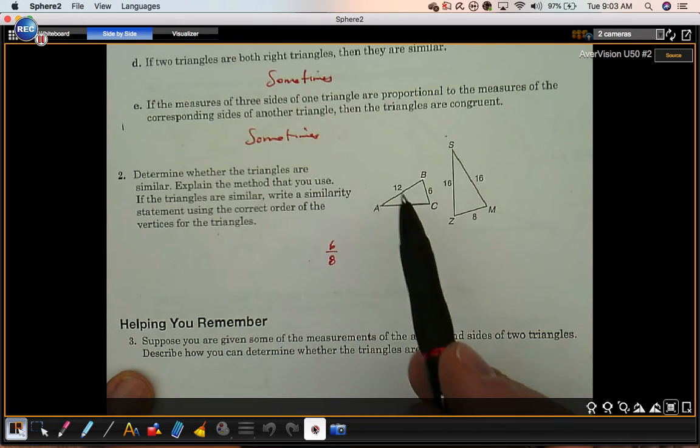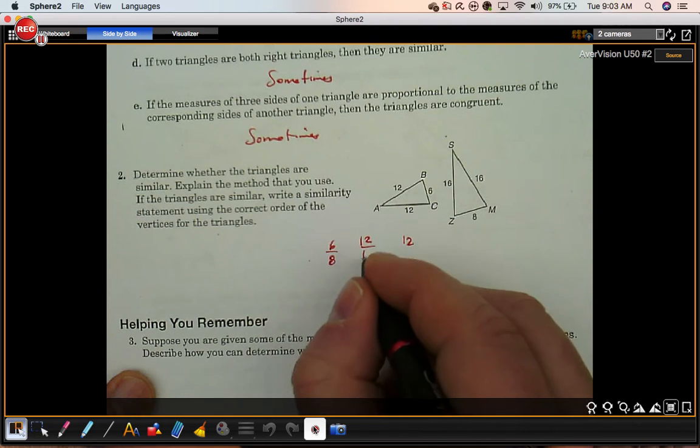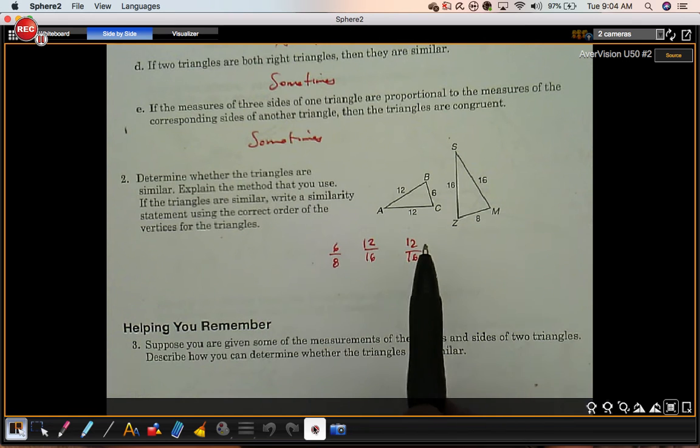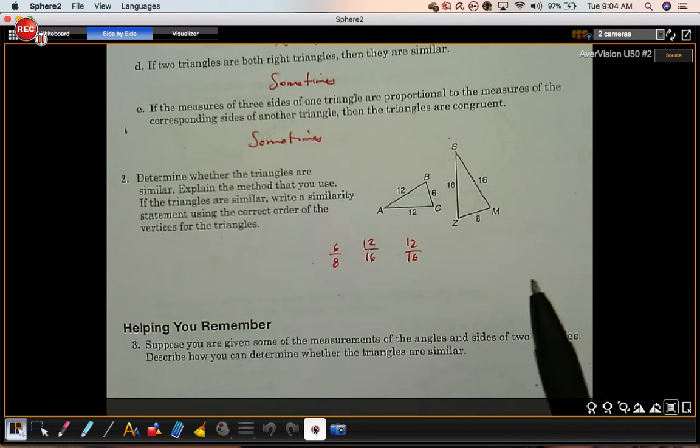This triangle is isosceles, so we have two sides of length 12, and that matches up with this guy, obviously. Two sides of 16. So if these ratios all equal the same thing, then what that means is you've got three pairs of proportional sides. And if you have that, then the triangles are similar. So let's check.